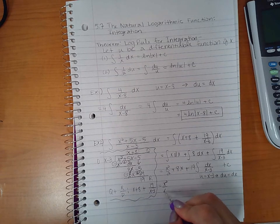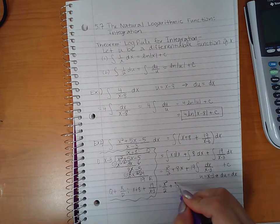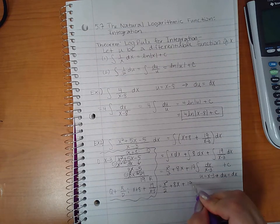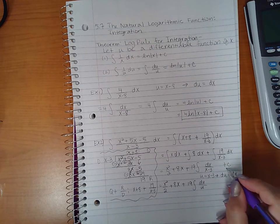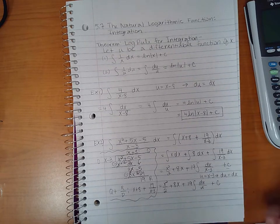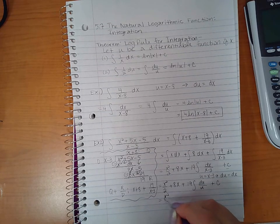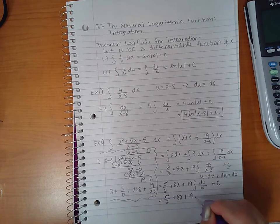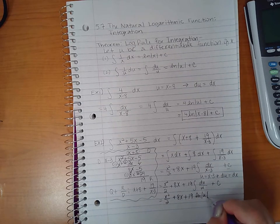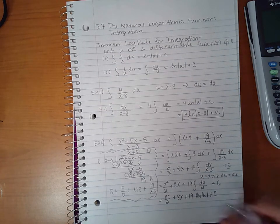So u would be x minus 3, du would just be dx. So if we substitute, we get the integral of du over u, and this plus c I'm just going to rewrite it here. And then if I integrate that, I get 19 ln of the absolute value of u plus c, and this c just makes one big fat c.